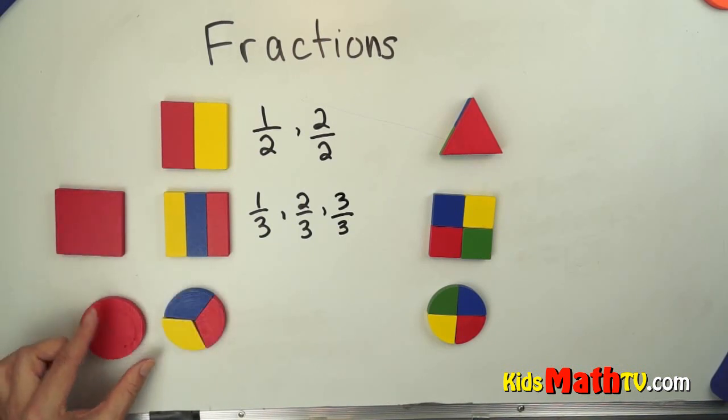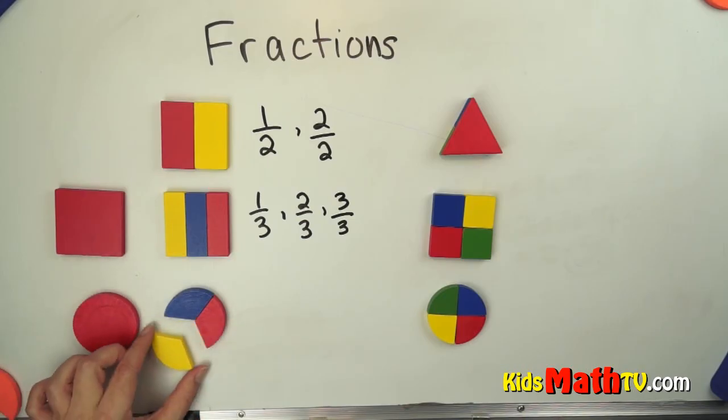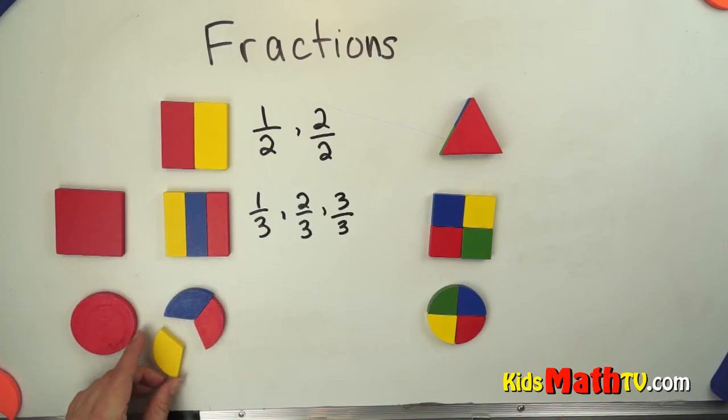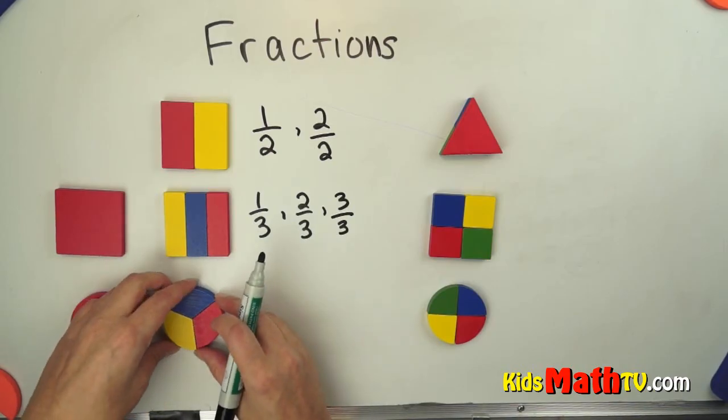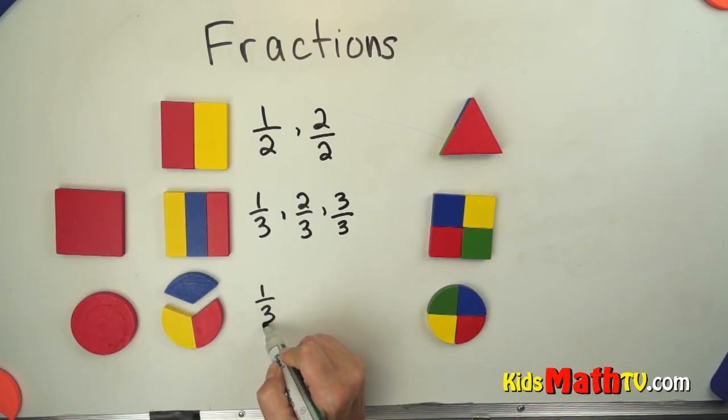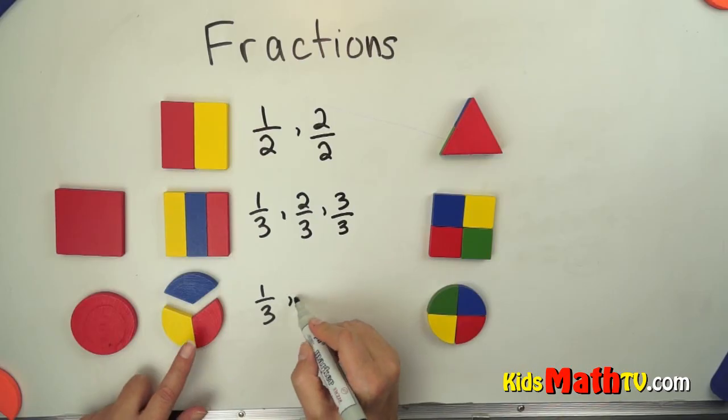Here we have a circle. This circle is split into three equal parts. That is the same shape and size as both of these other pieces. So we have this whole circle split into three parts. I could take out one third of that, or this side is two thirds.